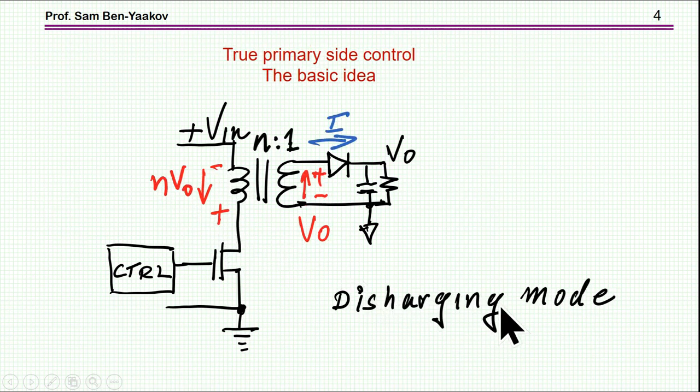during the discharge instant, when current is flowing outside, the voltage at the output is reflected back to the input, to the primary winding, at the ratio of N to 1. This is the turn ratio of this coupled inductor. So we see here a reflection of the output.